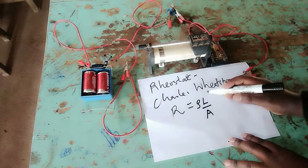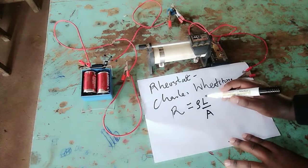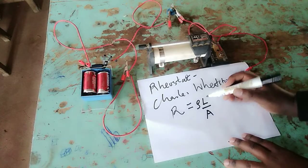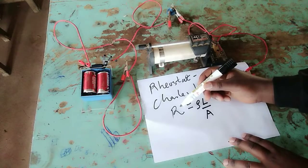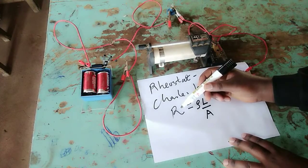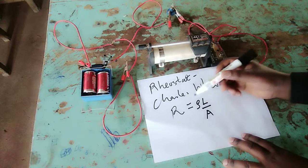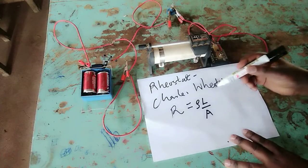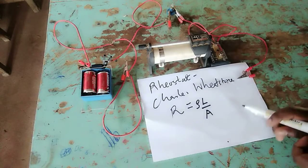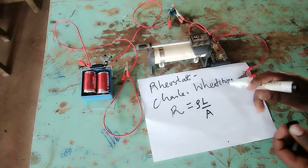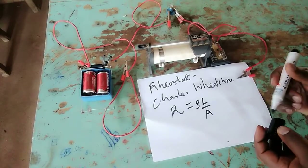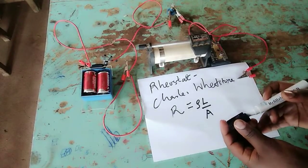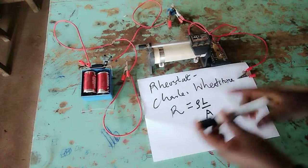The length of a resistance wire is directly proportional to the resistance it offers, which means that a resistance wire which is very long will offer a greater resistance as opposed to a resistance wire having a smaller resistance.